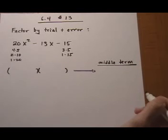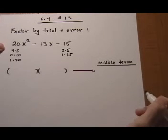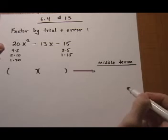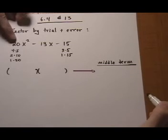6.4 number 13, another trinomial, and we want to factor by trial and error. Remember, if you're not liking the trial and error after you do a bunch of them, give it enough time, try them out. You can always go back to the 6.3 method and use the grouping method. So first we look at...